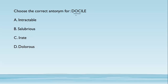Choose the correct antonym for 'docile.' The meaning of docile is used for someone who likes to be supervised and likes to have authority over him. The opposite of such a word would be someone who does not like any kind of authority, so the answer is 'intractable' — meaning someone who does not like any authority and does things the way he wants.